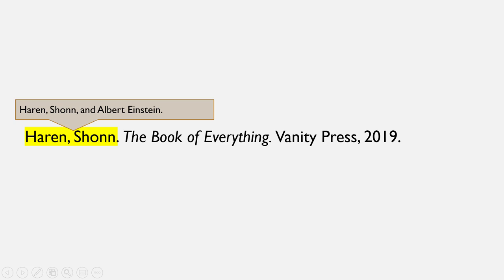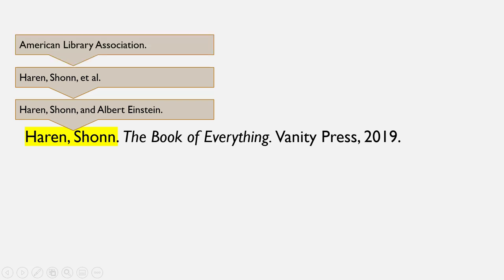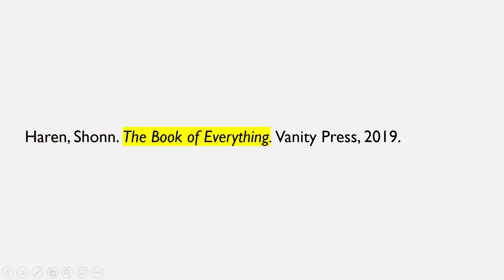If there are three or more authors, you only include the first author, followed by the phrase et al, which is Latin for 'and others.' The period goes at the end of al. If the book's author is a corporate entity, like the American Library Association, you enter its name as written — you do not try to determine which is the first name and which is the last. As always, end with a period. Finally, if a book has no author, you simply omit any author name and begin with the next part of the citation, which is the title of the book.